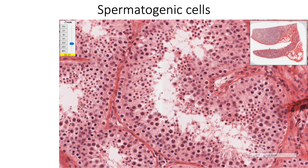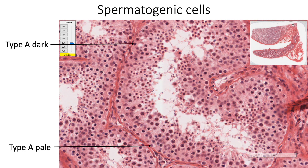In the basal compartment, three types of spermatogonia are found. Type A dark cells contain a dark granular ovoid nucleus and are stem cells that divide homotypically to form more type A dark cells, or heterotypically to form type A pale cells. Type A pale cells contain a light granular ovoid nucleus and divide to form type B cells, which have a spherical nucleus with clumps of chromatin at the nuclear membrane and often show a nucleolus. Type B spermatogonia undergo mitosis to give rise to primary spermatocytes.